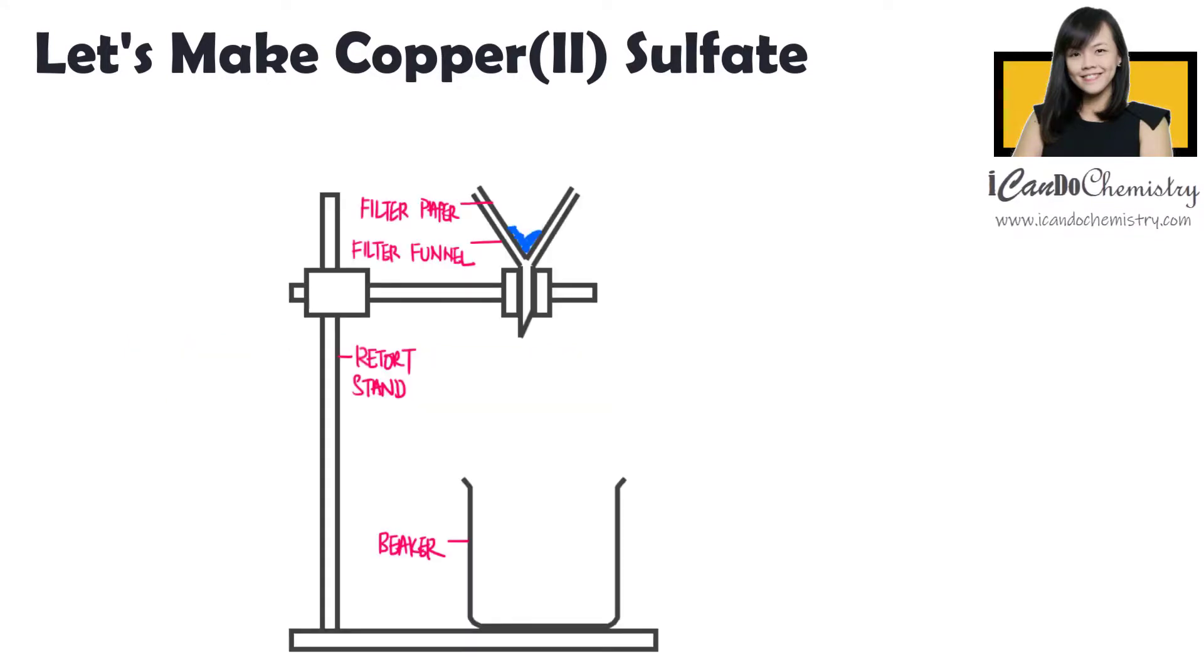Filter to collect the crystals. To remove the remaining impurities, we will wash with little amount of cold water. We use cold water because copper-2-sulfate salt is soluble. We want to avoid dissolving it again. Lastly, we dry the crystals between filtered paper.